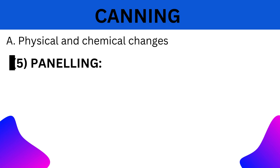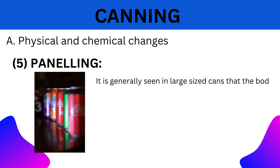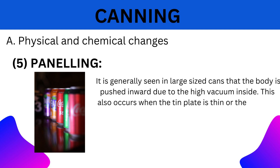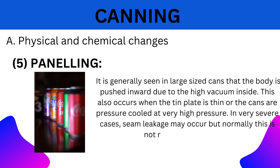5. Paneling: It is generally seen in large-sized cans that the body is pushed inward due to the high vacuum inside. This also occurs when the tin plate is thin or the cans are pressure-cooled at very high pressure. In very severe cases, seam leakage may occur, but normally this is not regarded as spoilage.